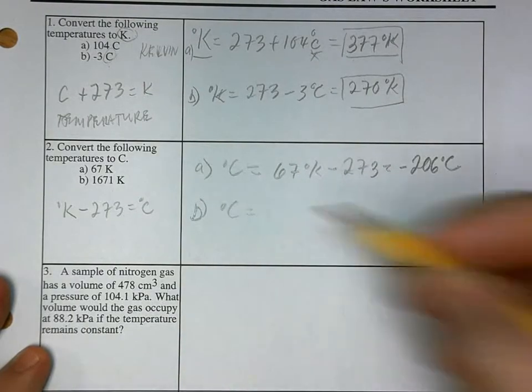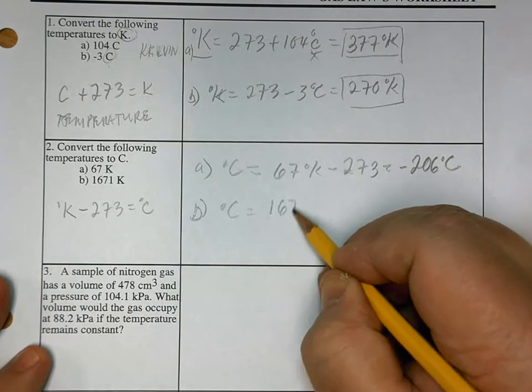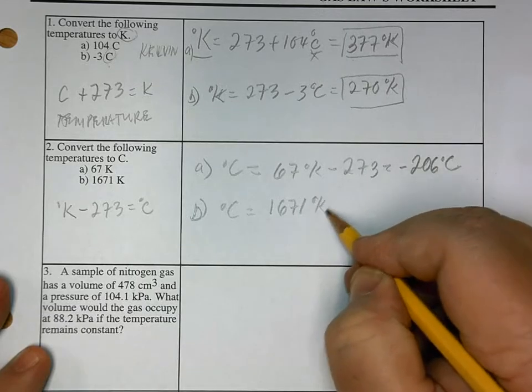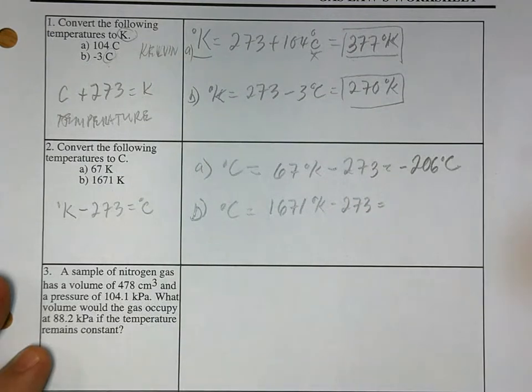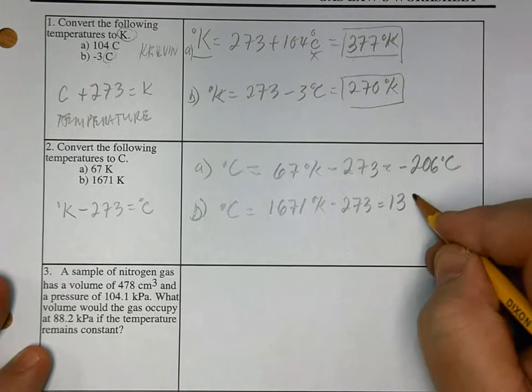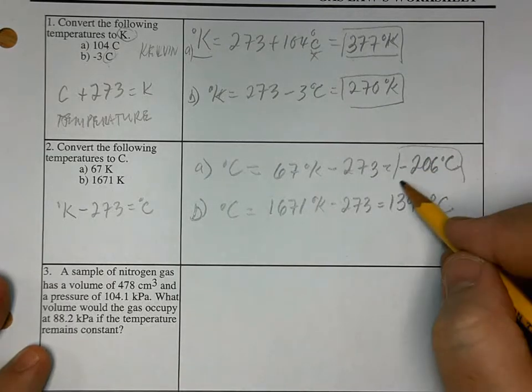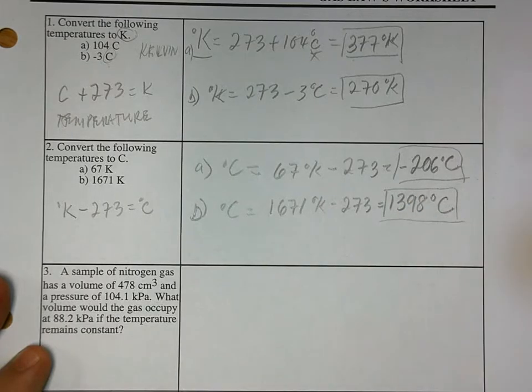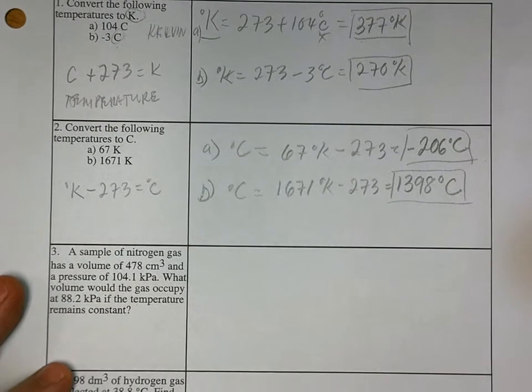Letter B. Degrees centigrade is equal to 1671 degrees Kelvin minus 273 is equal to 1398 degrees C. Put a box on your answers always so that your teacher can find it easily.